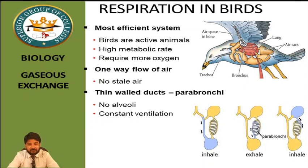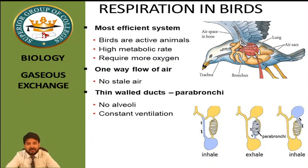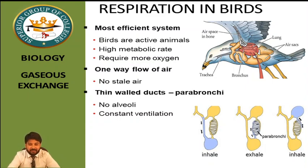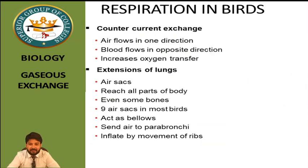During inhalation, air enters the marked area into the air sacs. During exhalation, air moves into the parabronchi — because birds do not have alveoli; instead they have parabronchi where blood and air flow in a counter-current manner, meaning if air flows left to right, blood moves right to left. This counter-current flow plays a role in maximum oxygen absorption. In the third step, air moves from the air sacs through the parabronchi into another air sac, from where it is exhaled out.